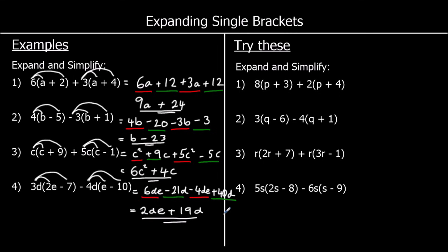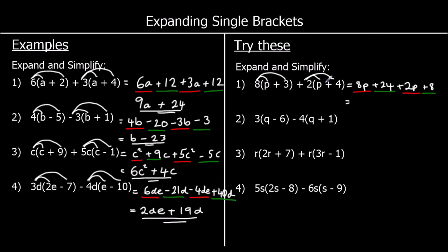Four more for you to try — have a go at these ones now. The first one: 8 times p is 8p, and 8 threes are 24. 2 times p is 2p, and 2 fours are 8. Collecting like terms: 8p plus 2p is 10p, and 24 plus 8 is 32. So 10p plus 32.